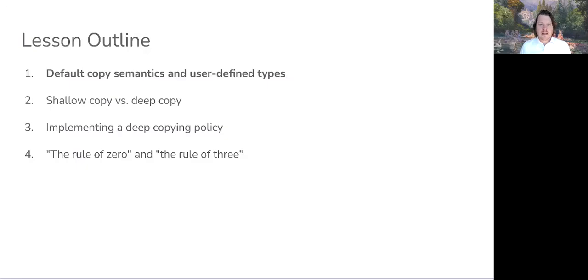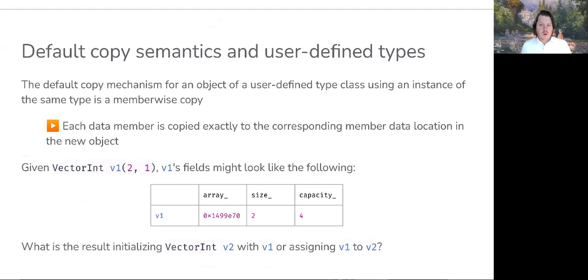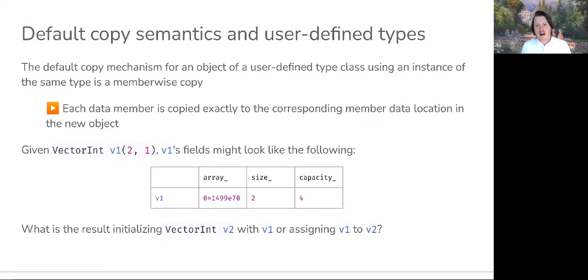Hi and welcome back. We'll begin today's lesson with a discussion on the default copy semantics afforded to our user-defined types. The default copy mechanism for objects of user-defined types is implicitly provided by the compiler. The default behavior of these operations is a member-wise copy, which is defined as taking each data member from one object and copying its value into the corresponding data member in the object we're initializing or assigning to.